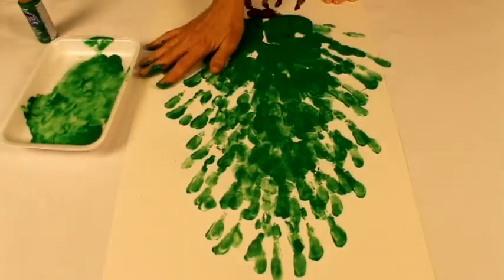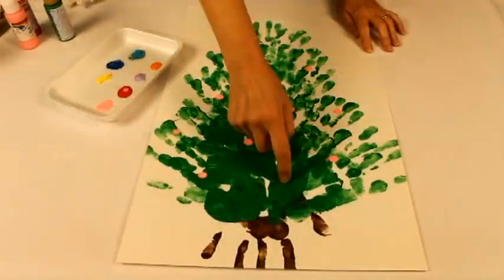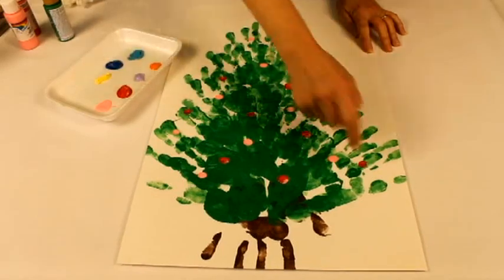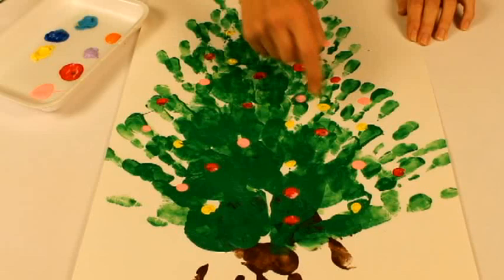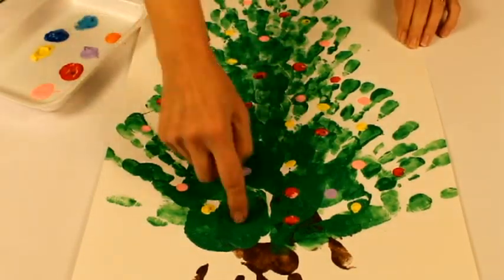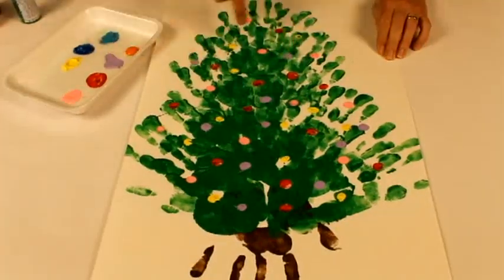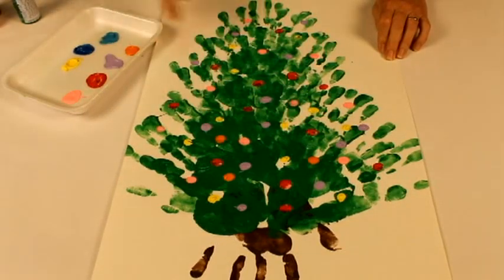Then, put several colors such as yellow, red, orange, blue, purple on another styrofoam tray to paint the lights of the Christmas tree. Dip the tip of a finger in the paint and tap the color around the tree to decorate with lights, and continue with different colors.